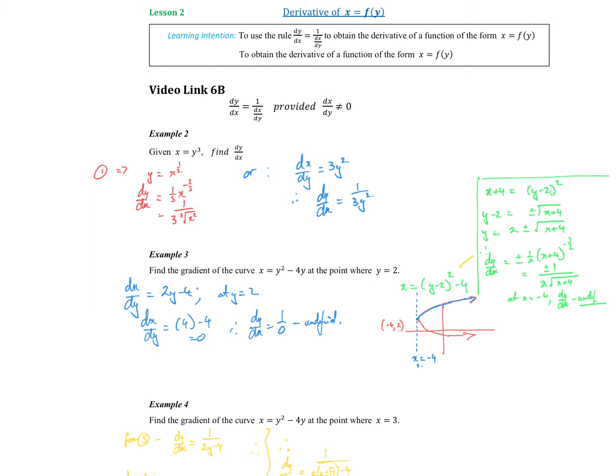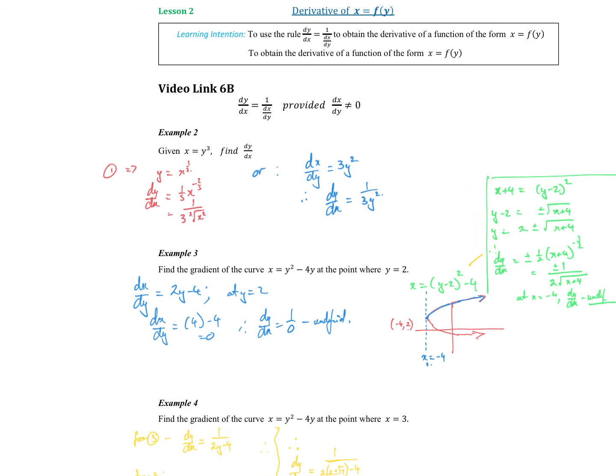But if our function is in terms of y, we could do one of two things. We could transpose it, and we can see that in red the first time I've done it. I could just rearrange and put y equals x to the power of a third, and we end up with a one-third of a cube root function in there. So we could go that way, or, well, let's work out dx/dy instead. So let's work out the derivative of x with respect to y, which is really straightforward. It's just 3y squared.